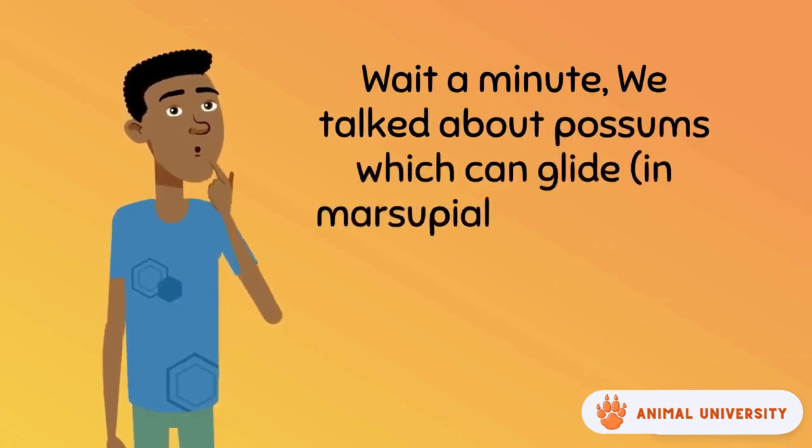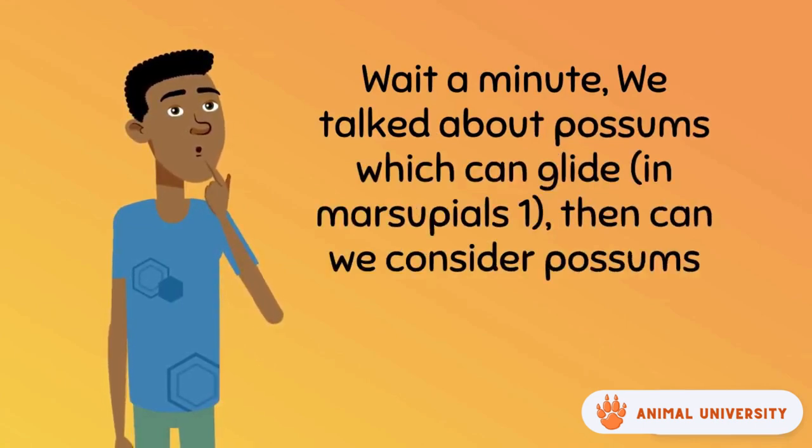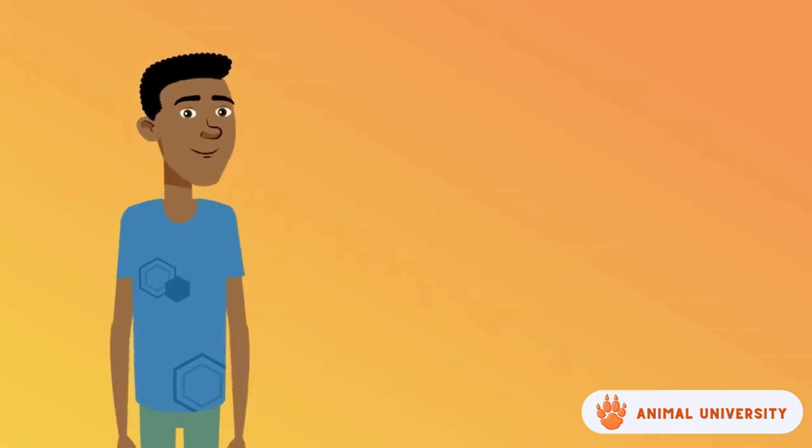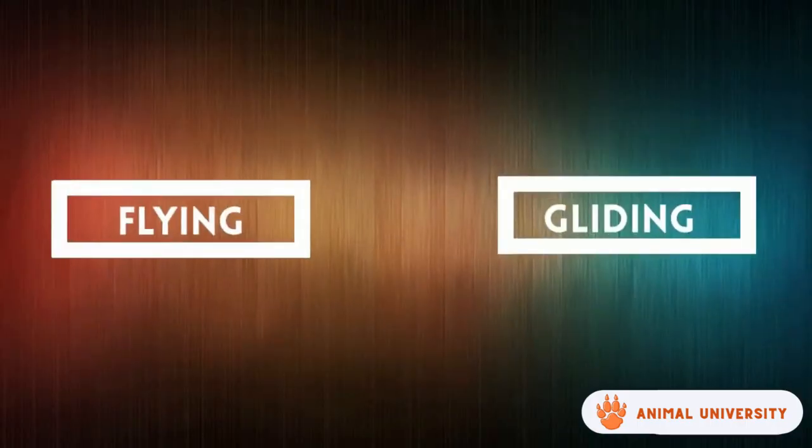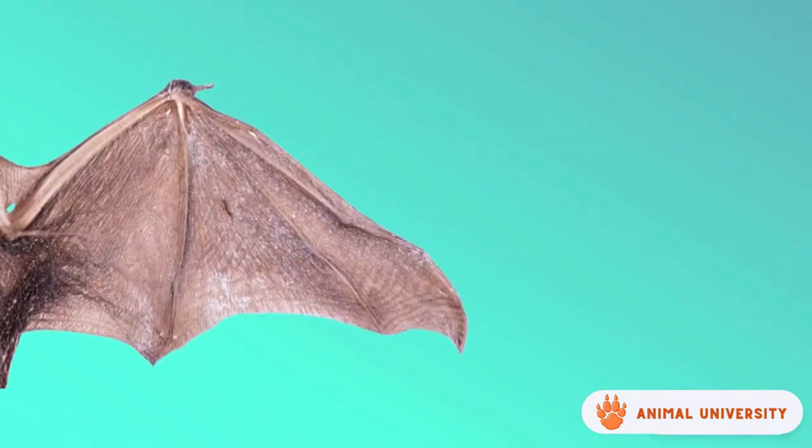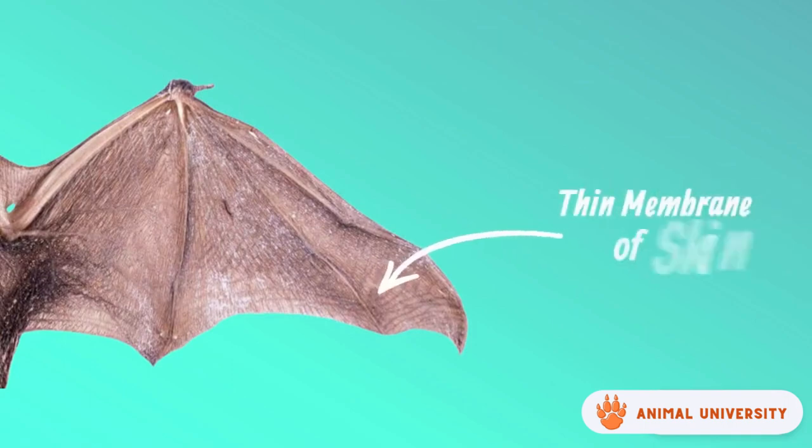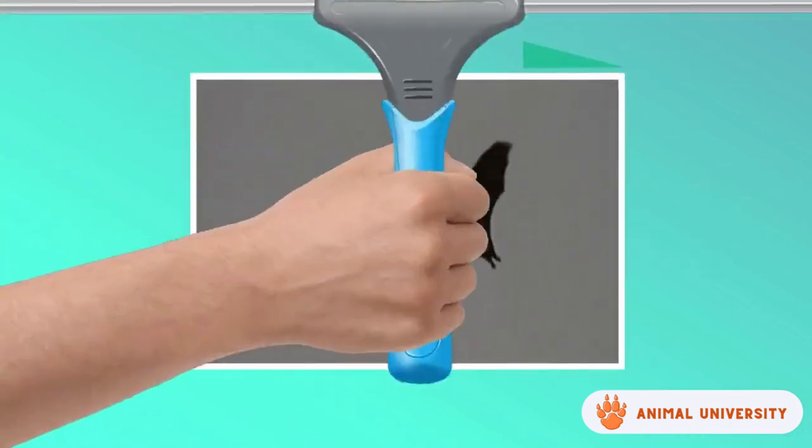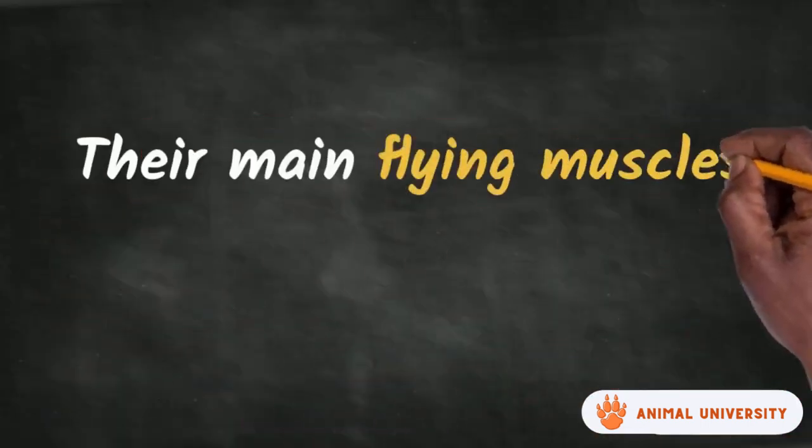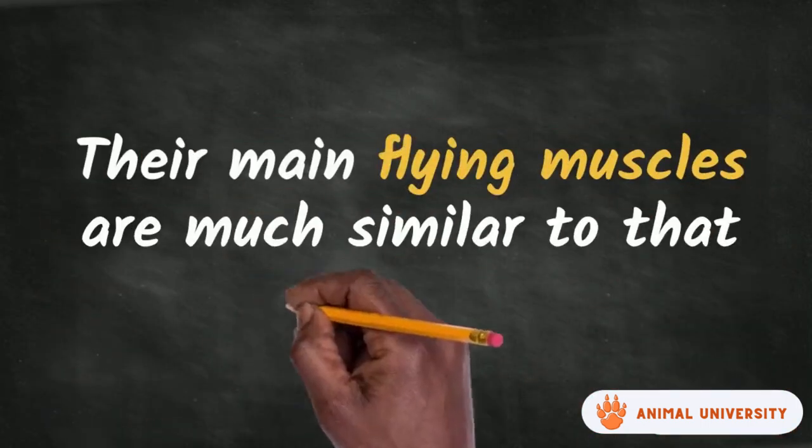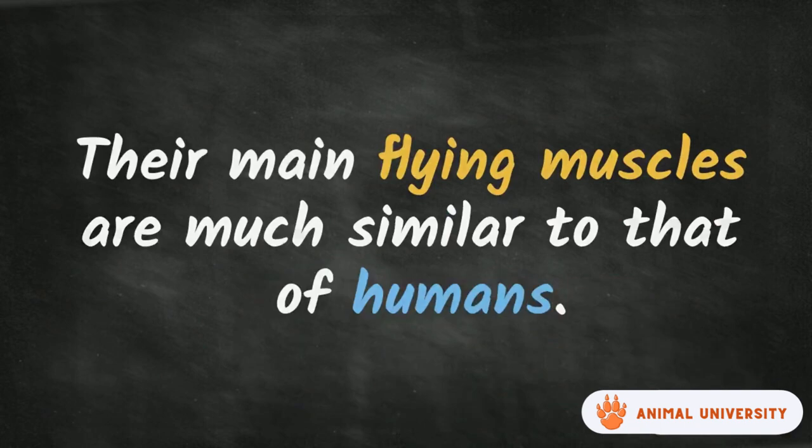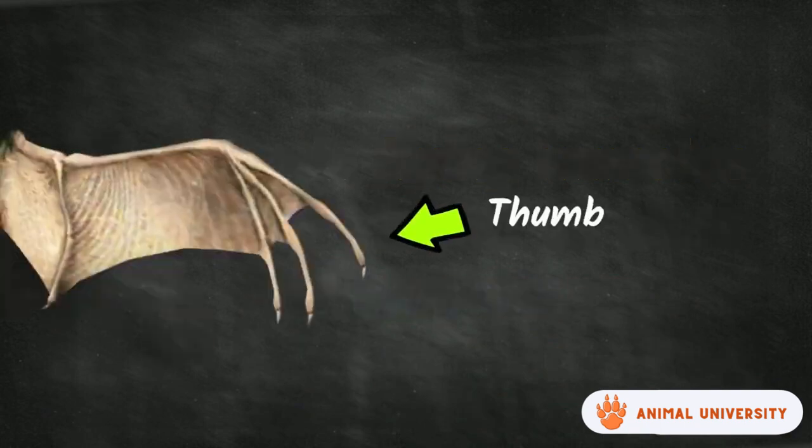Wait a minute, we talked about possums which can glide in Marsupialia. Can we consider possums flying? No, actually flying and gliding are different. Gliding is a form of jumping. Bats' wings are developed to fly with a thin membrane of skin between their digits which helps move their wings. Their main flying muscles are similar to that of humans.